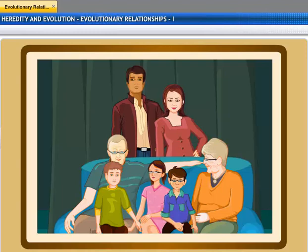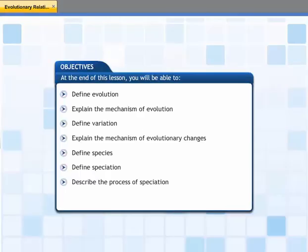So we can say that biological evolution is descent with modification. This lesson explains how species are formed and how they evolve over generations. At the end of this lesson,